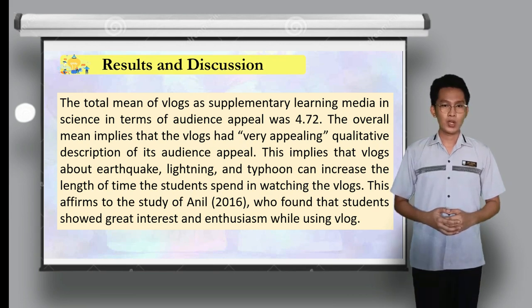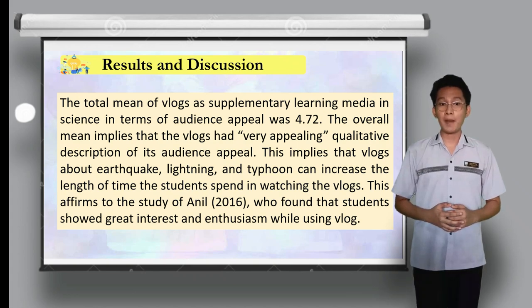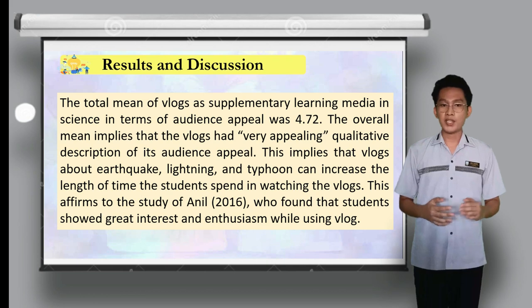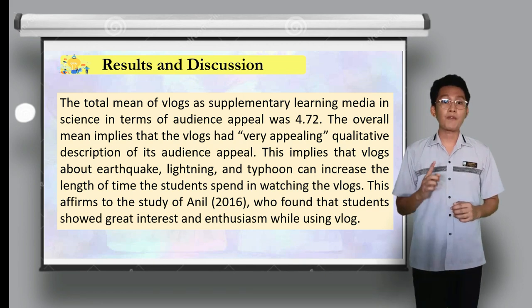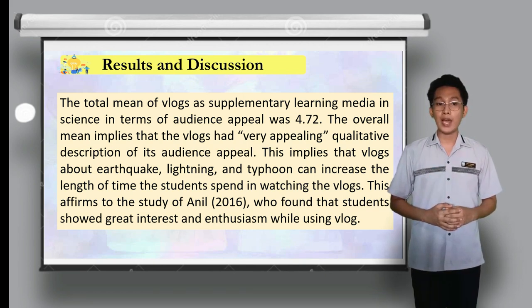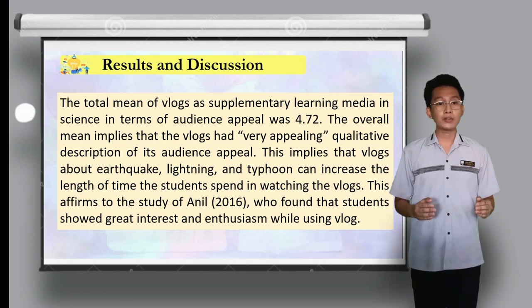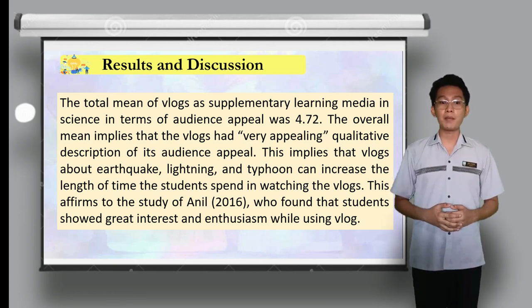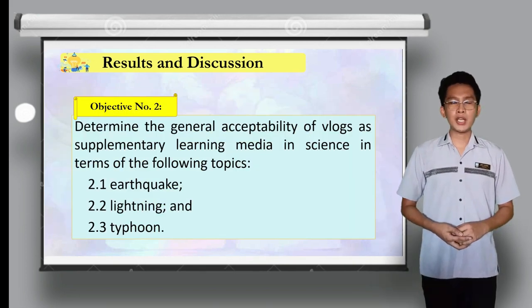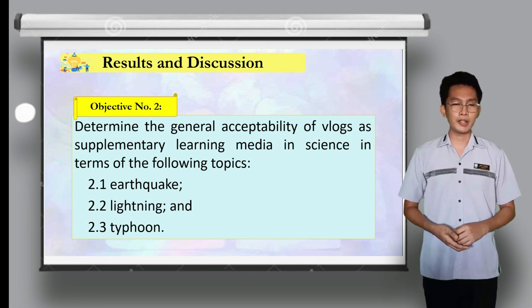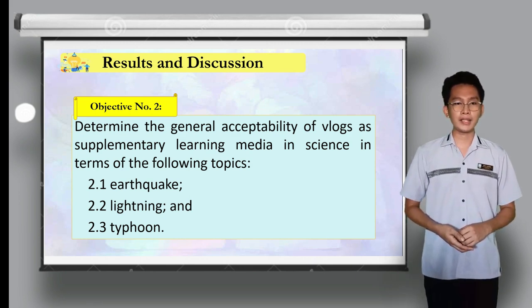The total mean of 4.73 implies the vlogs had a very creative qualitative description. The vlogs about earthquake, lightning, and typhoon can catch students' interest due to the fact that the whole video is filmed in a unique way. This conforms to Thompson et al. (2014), which found that using vlogs to convey appropriate and complementary information increases students' retention, ability to transfer information, and engagement with videos. The total mean in terms of audience appeal was 4.72, implying a very appealing qualitative description.